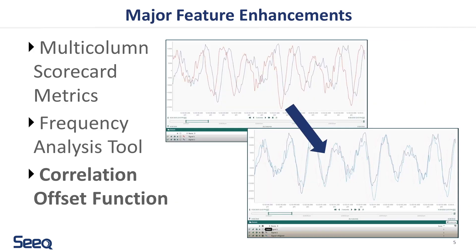Finally, the new formula function, Correlation Offset, improves regression analyses with time delay impacts. This formula first identifies a time delay between two signals and then shifts one so that the correlation is maximized in any subsequent regression analysis.